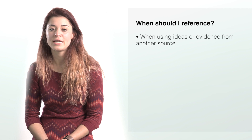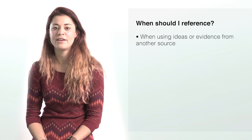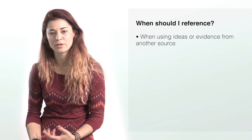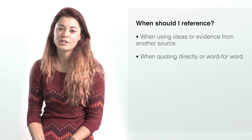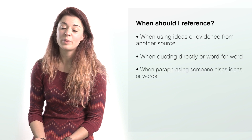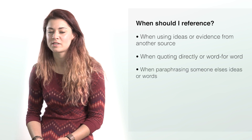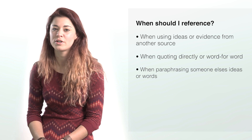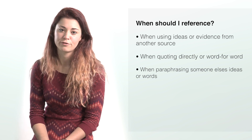There are a few different times that you need to reference during your work. As a general rule, you need to reference when you're using the ideas or evidence from another source. This includes when you're quoting directly or using word for word what someone else has said, and when you're paraphrasing the work of someone else. If you've got an idea from someone else and you've changed all the words, you still need to cite and reference where you got that from.